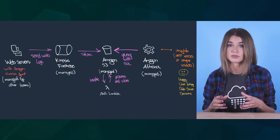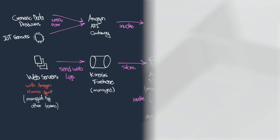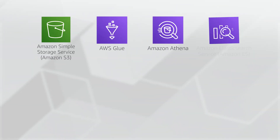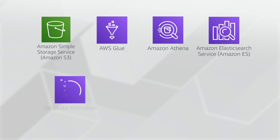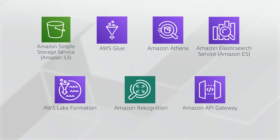Once you have a solid understanding of what a data lake is and why a data lake may be the right solution for your needs, we will explore the AWS data related services that will make it happen. During the second week of the course, we will begin to talk about the AWS services that can be used in data lake architectures, like Amazon S3, AWS Glue, Amazon Athena, Amazon Elasticsearch Service, Lake Formation, Amazon Rekognition, API Gateway, and other services used for data movement, processing, and visualization.